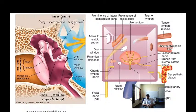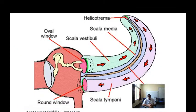When the foot plate of the stapes vibrates, vibrations are transmitted into the scala vestibuli. These in turn, at the helicotrema, send a wave in the reverse direction and are ultimately let out at the round window, which is covered by the secondary tympanic membrane. This is the basic mechanism of hearing.